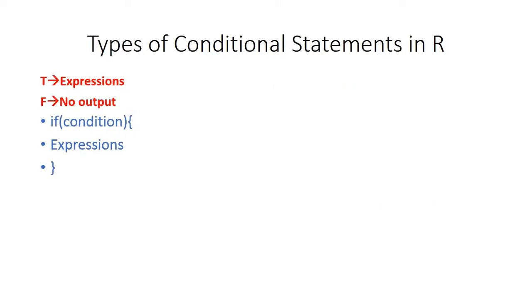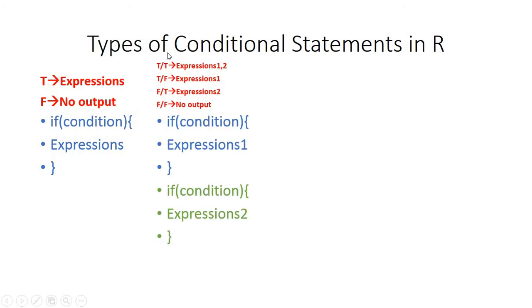In the first type of if statements, we have only one if statement with one or many conditions inside. It will depend upon those conditions. If all of those conditions are true then the expressions will be executed. If any of those conditions is false then the whole condition will be considered as false, so there will be no output.